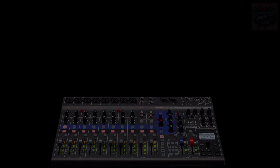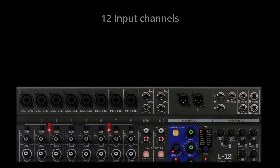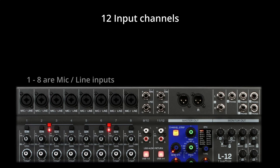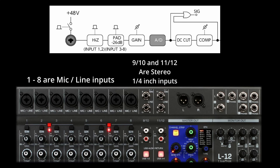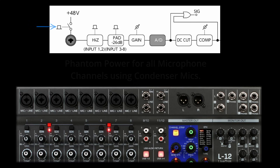Let's start with the signal flow. On this board we have eight mic/line inputs and two line level stereo inputs. The signal flow for the first eight channels starts with the combo jacks. Each of these channels, one through eight, features a combo XLR/TRS jack, allowing connections of either microphones via XLR for recording vocals or acoustic instruments, or line level sources via TRS for devices like keyboards, drum machines, or external preamps. These combo jacks automatically sense whether the input is low-level XLR or line-level TRS.